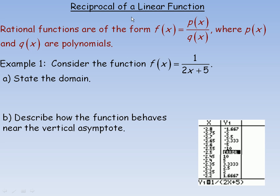When we speak about the reciprocal of a linear function, the value in the numerator is going to be a constant — it doesn't have to be one. In general, the p(x) value will just be some real number, and what's in the denominator will be a linear polynomial, so the variable x will always have an exponent of one. In the first example, we're considering the function f(x) = 1 over (2x + 5), and we're asked to state the domain.